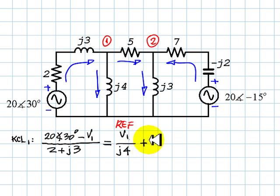And that is KCL1. Now we write the equation for this node, KCL2. Currents going in, this one and the other one coming from the source on the right-hand side of the circuit.